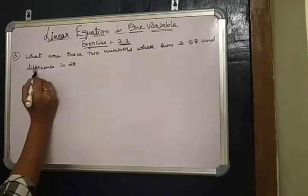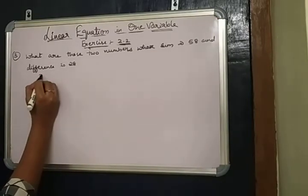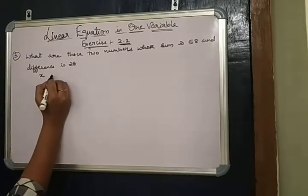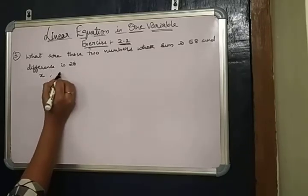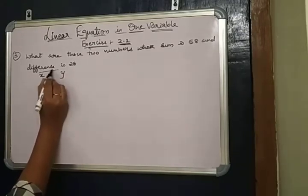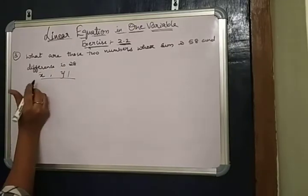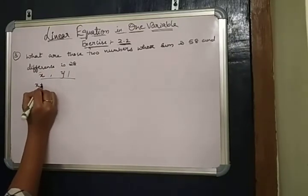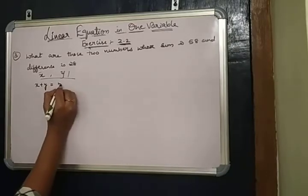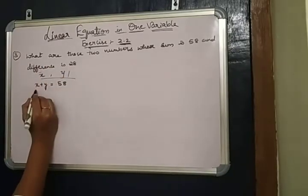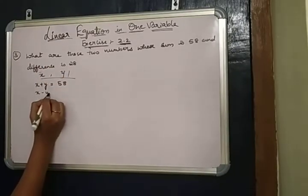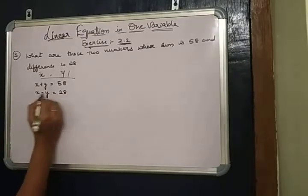We don't know those two numbers. Let one number be X and another number be Y. The sum of those two numbers, X plus Y, equals 58. And the difference of those two numbers, X minus Y, equals 28.